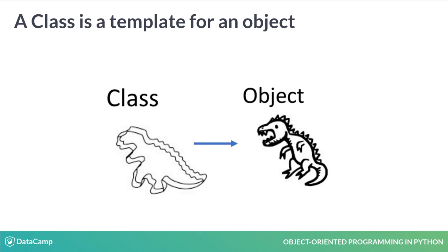Later on in this course, we'll look at how to create objects that are different through inheritance and polymorphism. For now, we need to understand that a class is a template for an object.